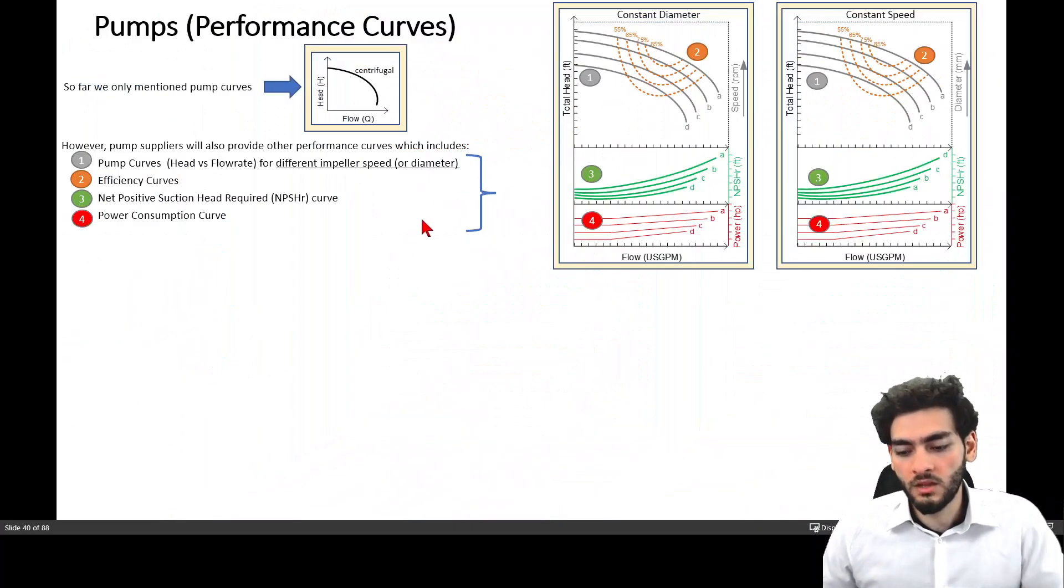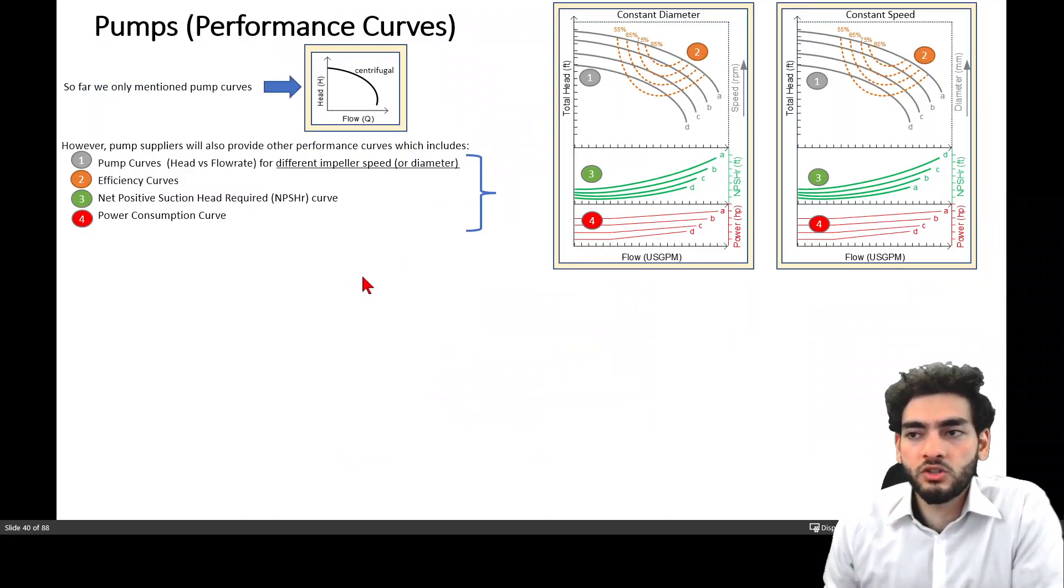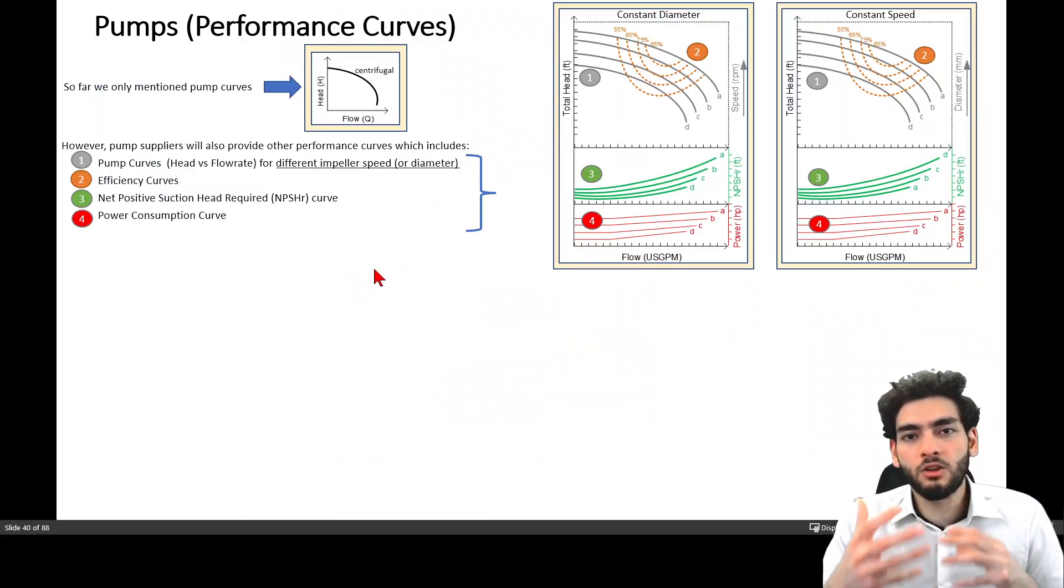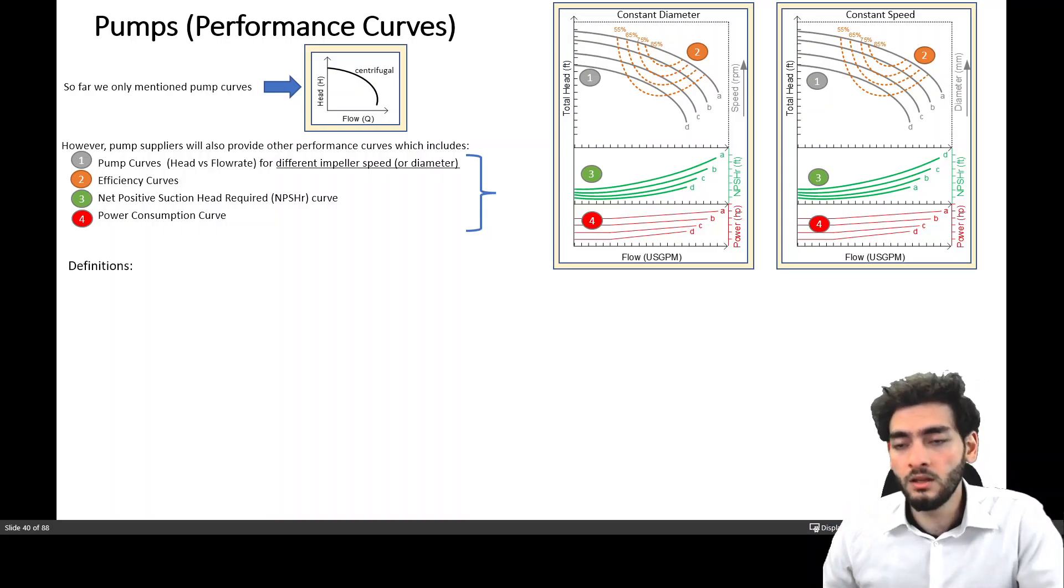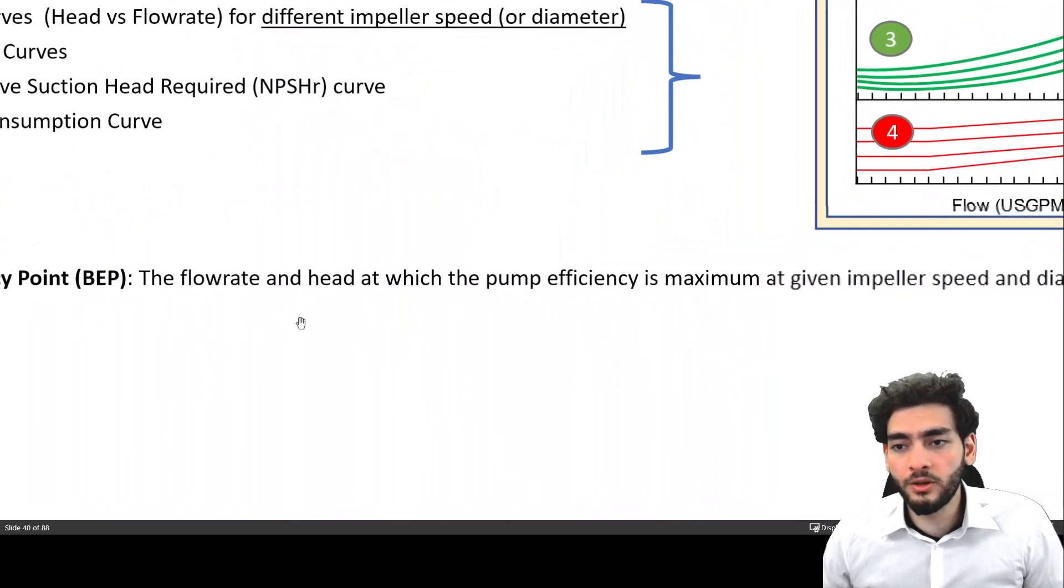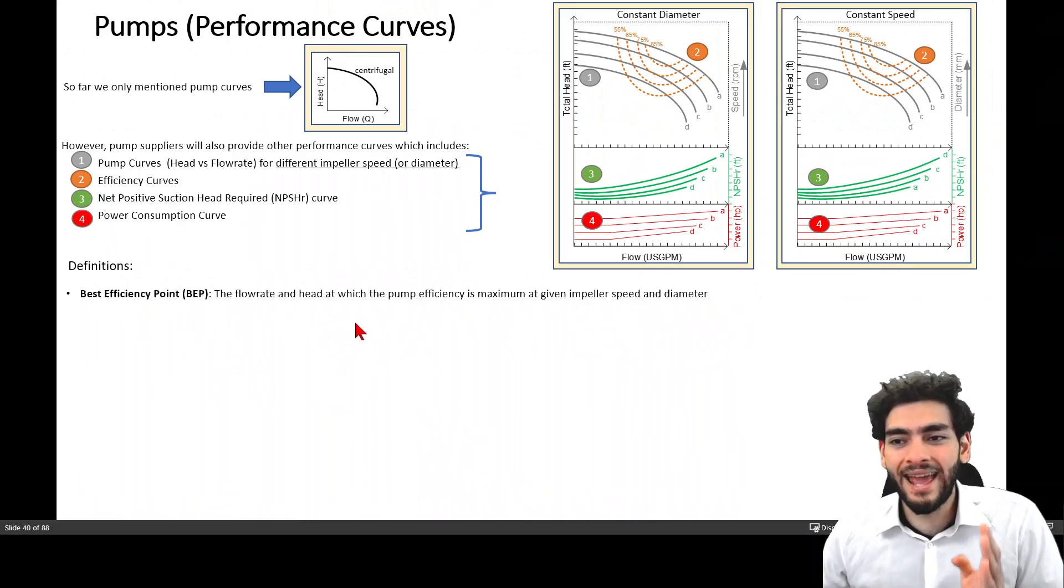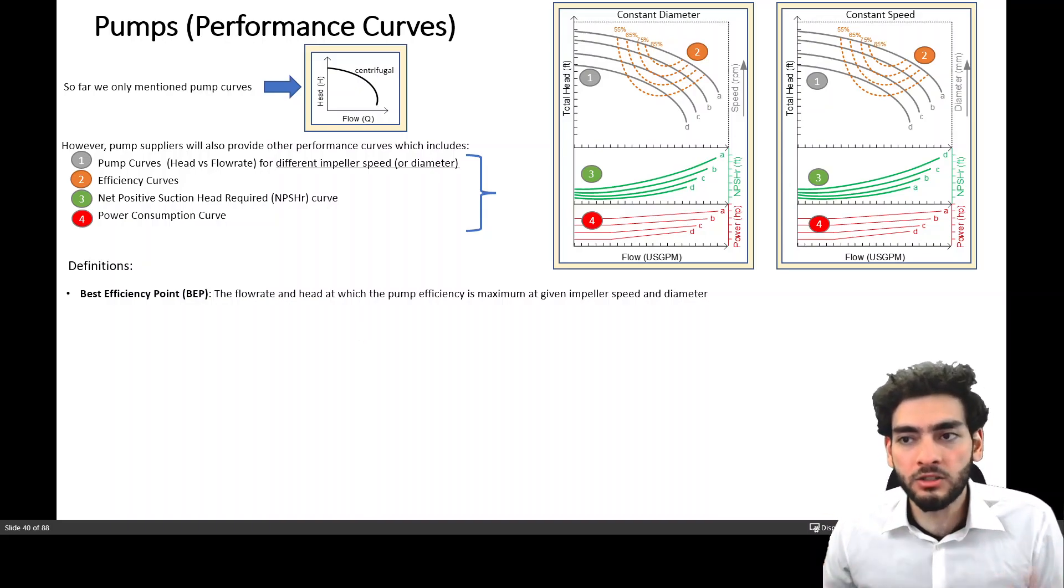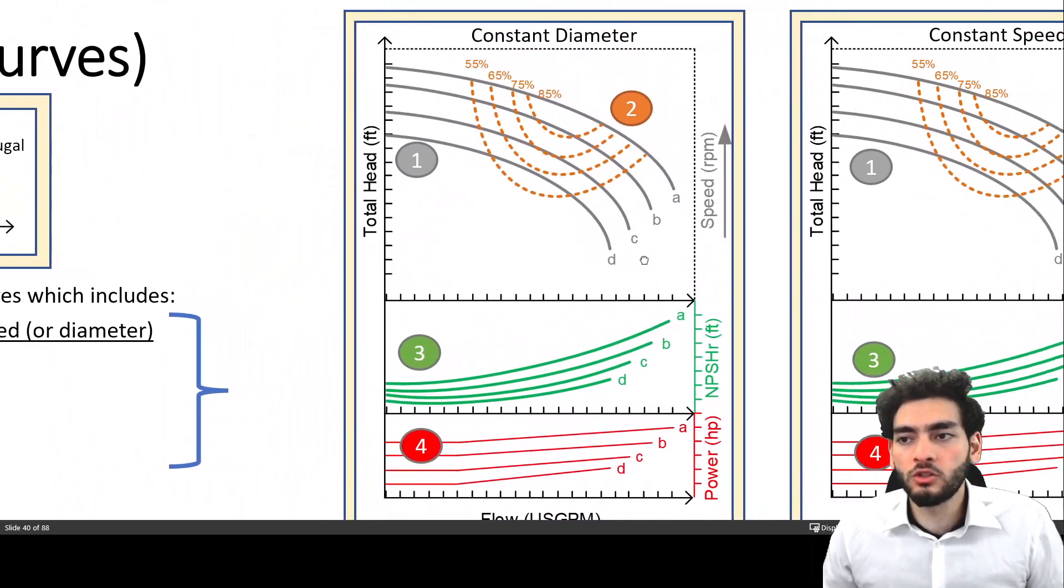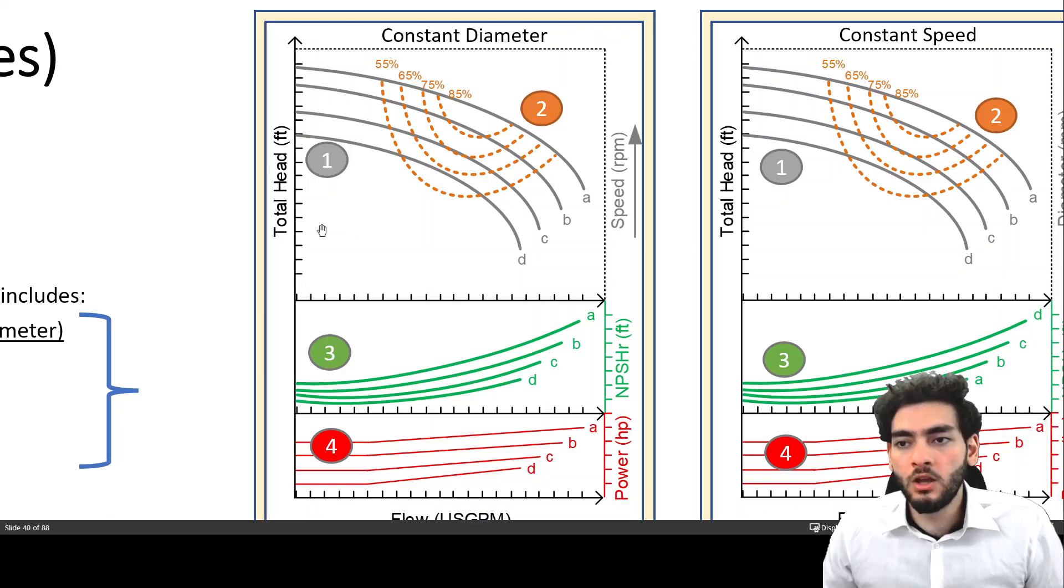Essentially, I want to go through some definitions with you because I've used best operating point and I haven't defined that. And there are some other terminologies that are important for you to know. So the best efficiency point is basically the flow rate and head at which the pump efficiency is maximum at a given impeller speed or diameter. So if we're looking at this curve, the best efficiency point would be operating closer to the 85% efficiency region.